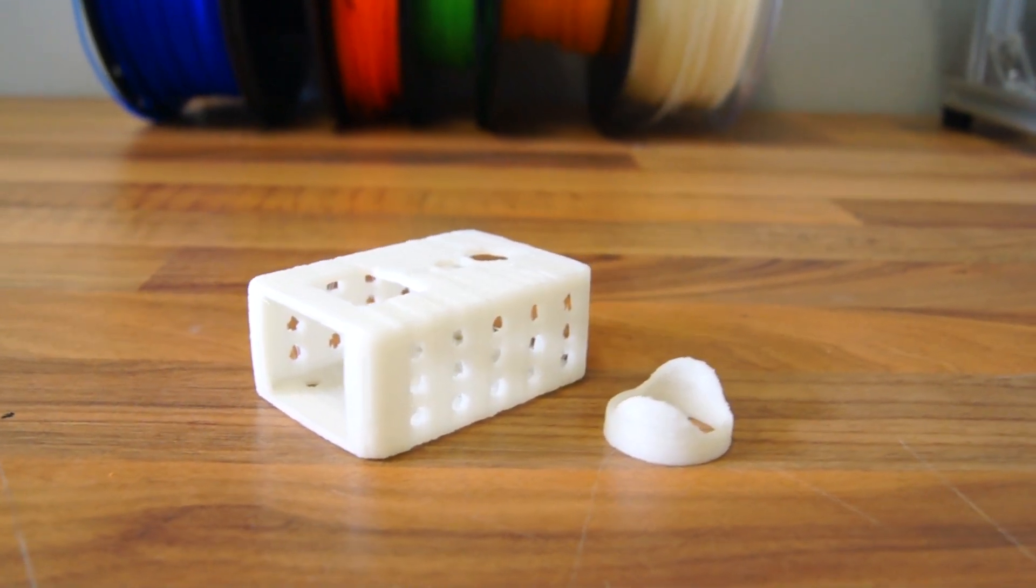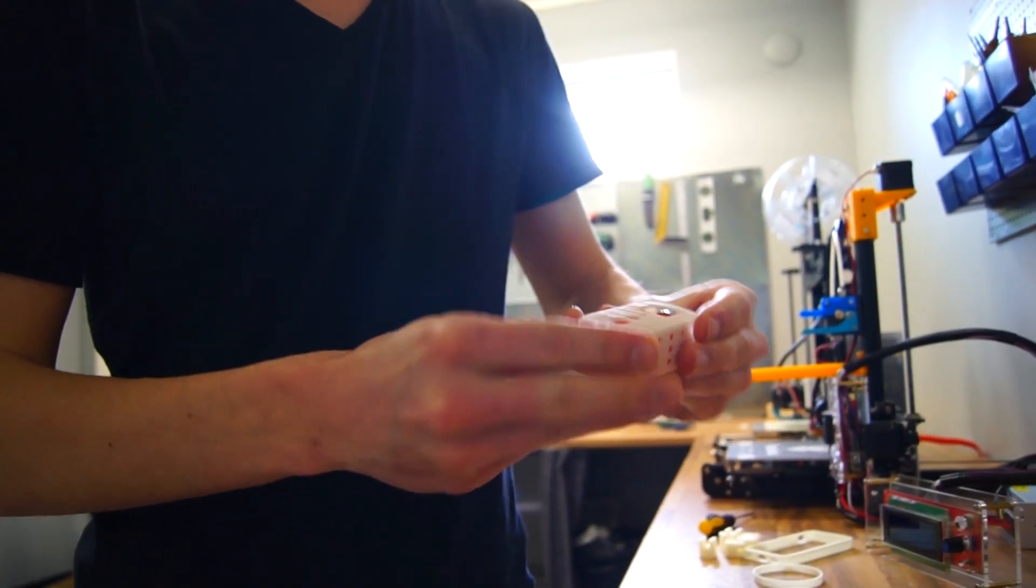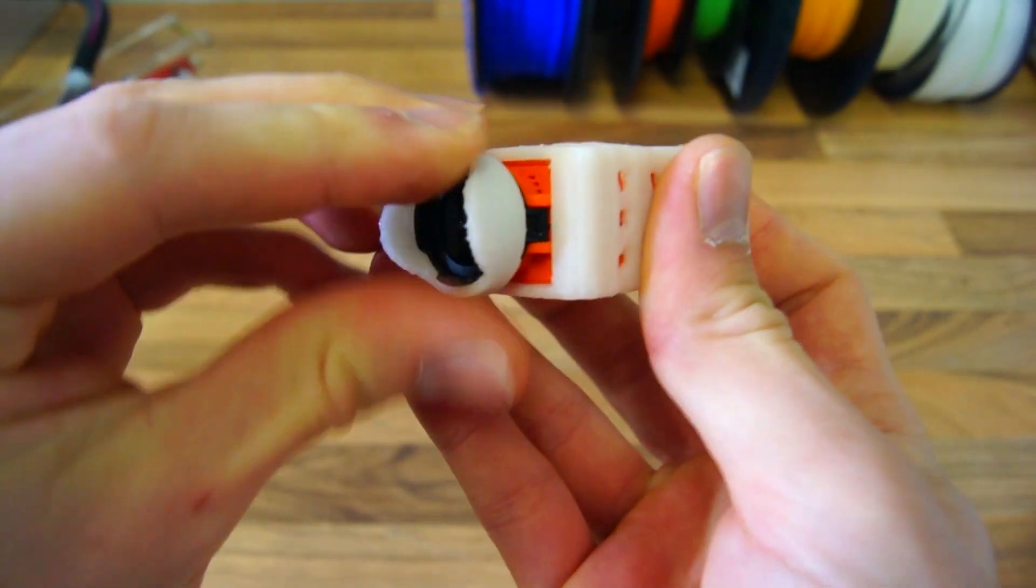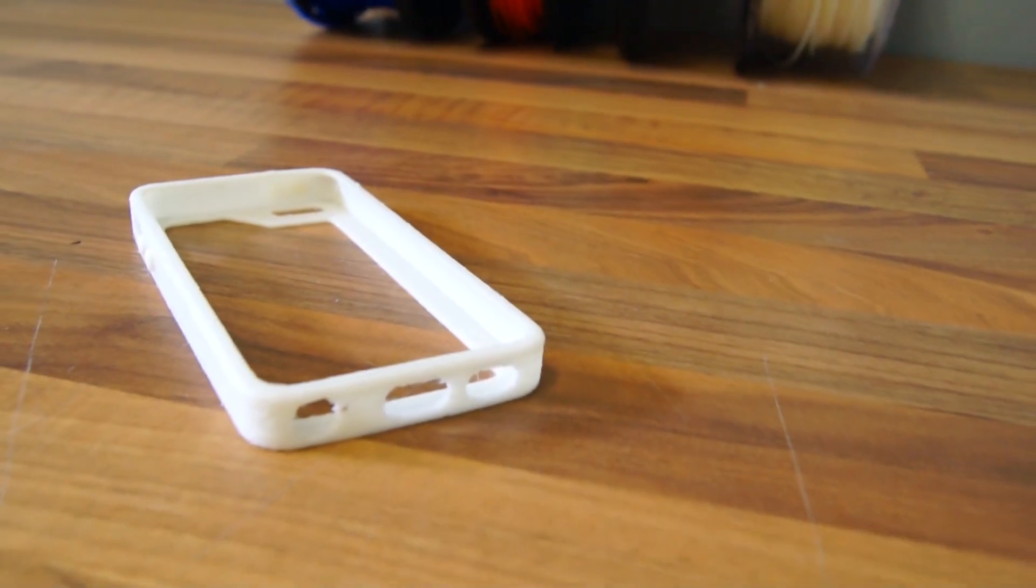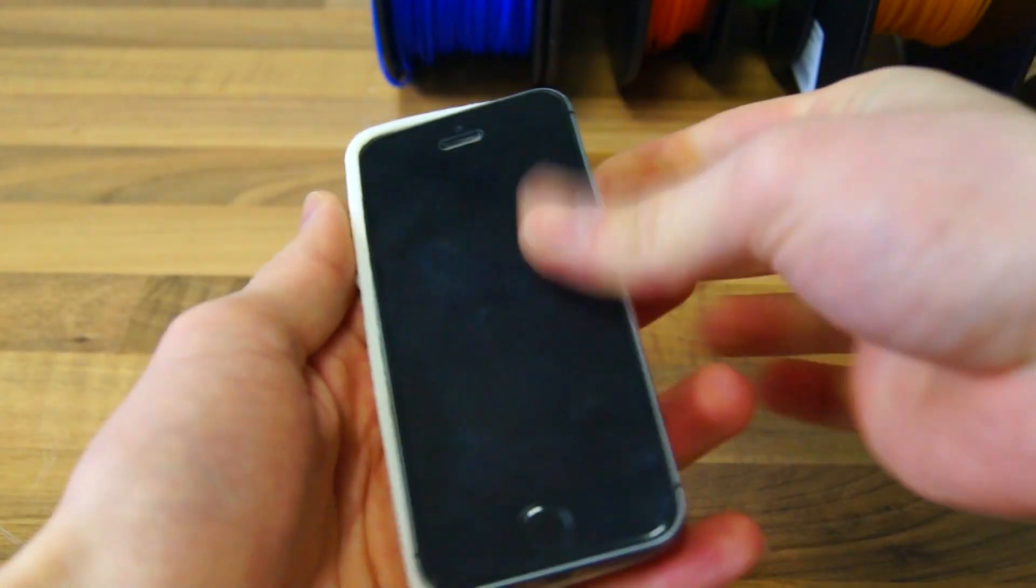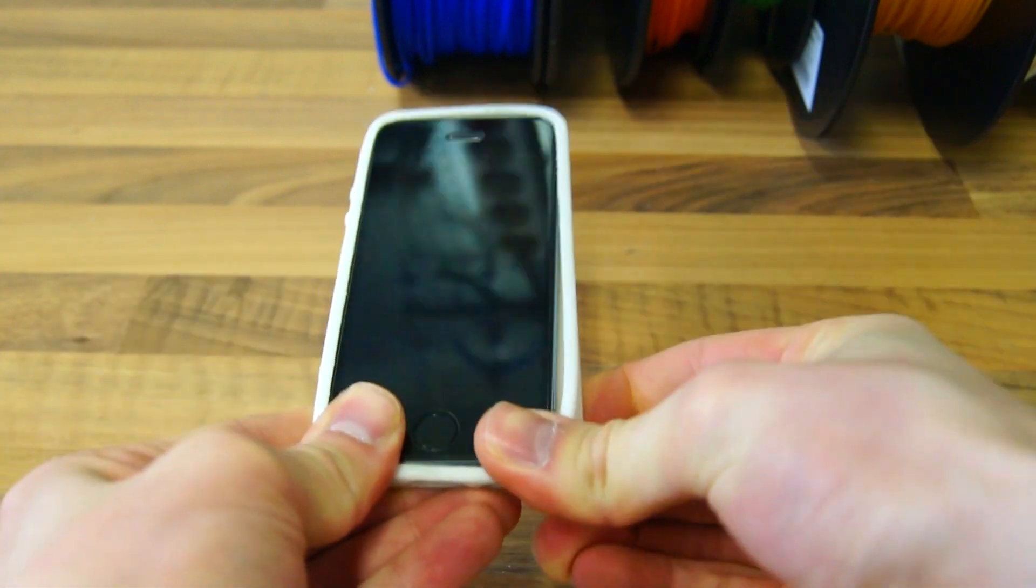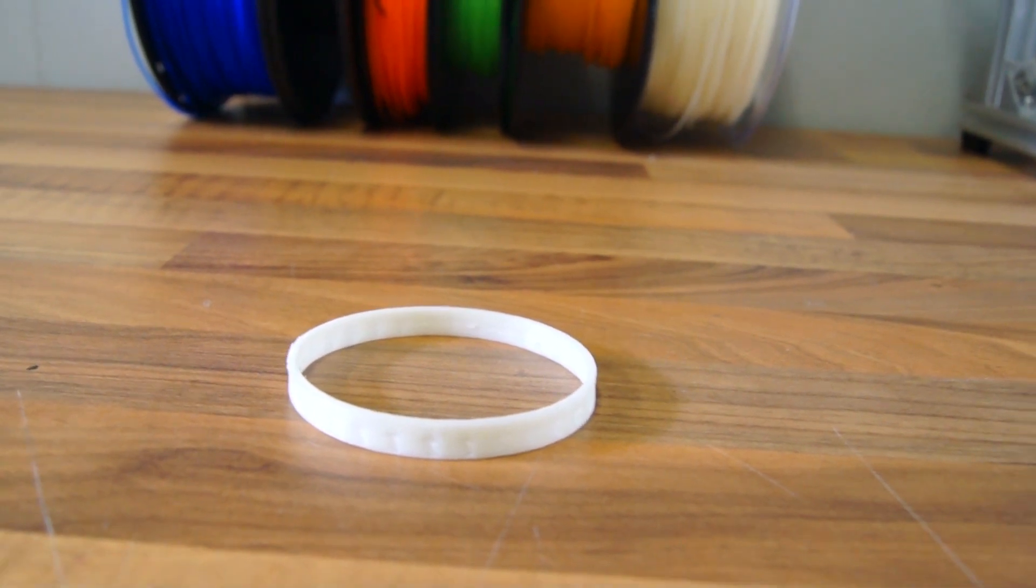Besides vibration dampening you can use this material to make protective casings for your action cameras, a protective iPhone case, or even customizable bracelets that we used to wear back in the days.